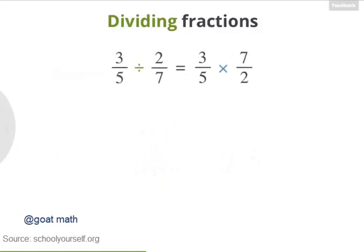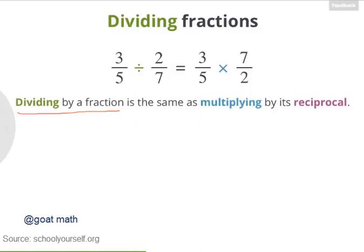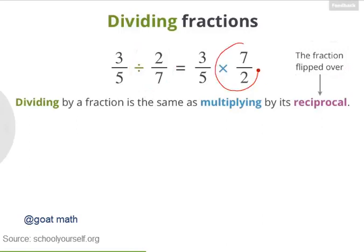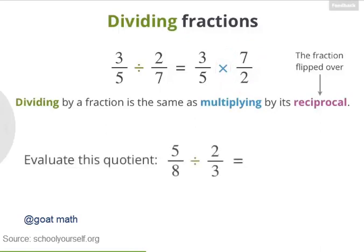Let's take a closer look at what's going on. Dividing by 2 over 7 turns out to be the same as multiplying by 7 over 2. And notice that 7 over 2 is what you get when you flip the numbers in this fraction, making 2 the denominator and 7 the numerator. In general, dividing by a fraction is the same as multiplying by its reciprocal. And reciprocal is a fancy word for the fraction flipped over. So dividing by 2 sevenths is the same as multiplying by the reciprocal of 2 sevenths, which is 7 halves.